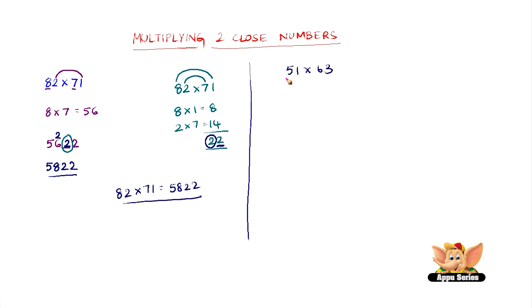Again consider the first digits of the two given numbers, that is 5 and 6. So 5 into 6 is 30. So the first two digits of the answer will be 30, the next digit will be a blank space and the next one will be the multiplication of the units digits of the two numbers, that is 1 into 3 which is 3.